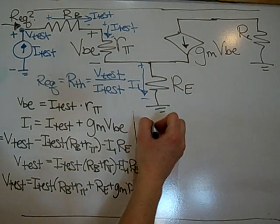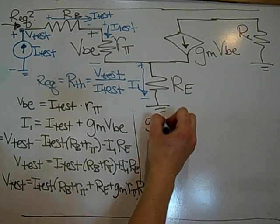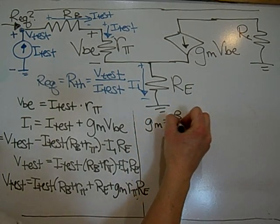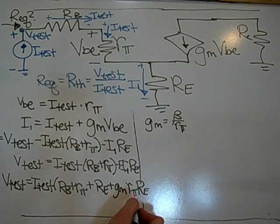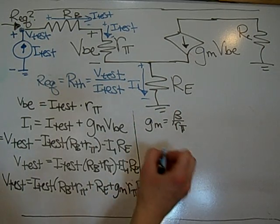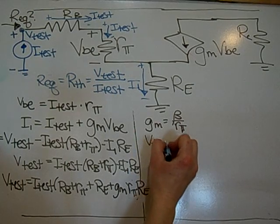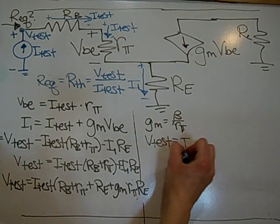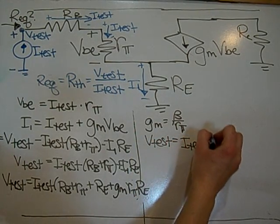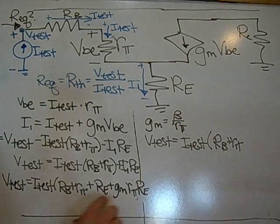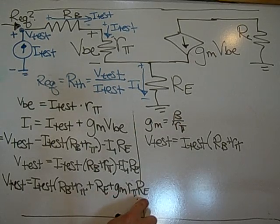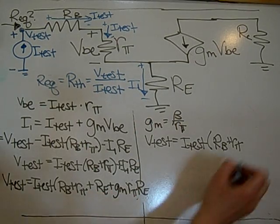So note that gm can also be written as beta over R-pi. So if gm multiplied by R-pi, we'll just leave beta. V-test becomes I-test, Rb plus R-pi plus Re plus beta Re. So this is 1 plus beta Re.